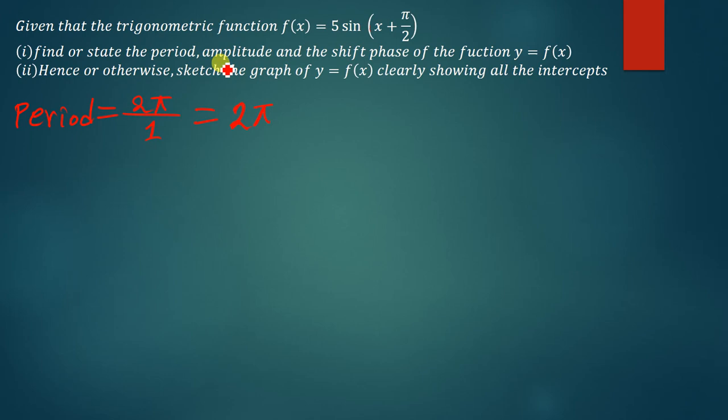And then apart from that, we've also been asked to find the amplitude. So how do you find the amplitude? So the amplitude is simply just the coefficient of a trigonometric function. So in this case, the amplitude is simply just 5.